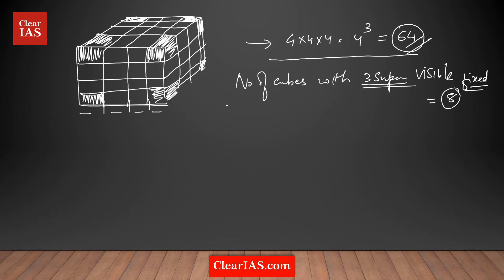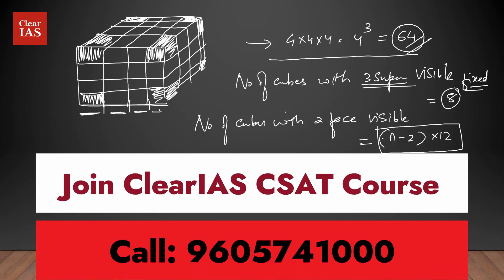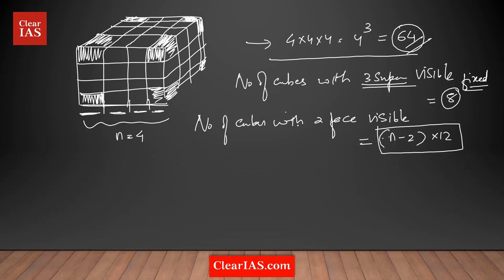You might also get a question: how many cubes have 2 faces visible? You can always use this equation — it's not practical to count when there are 64 or more cubes. The formula is: number of cubes with 2 faces visible = (n − 2) × 12. Here n = 4, so it's (4 − 2) × 12 = 2 × 12 = 24 cubes with 2 faces visible.